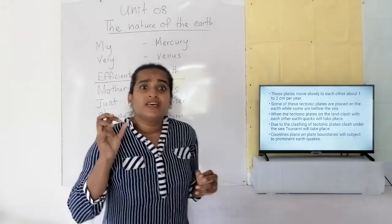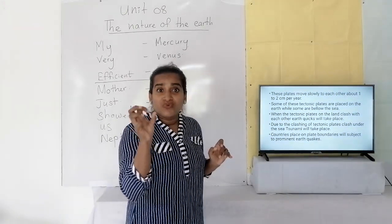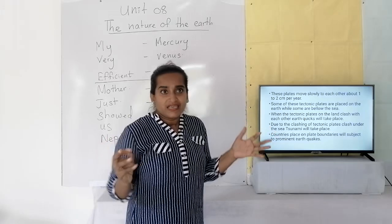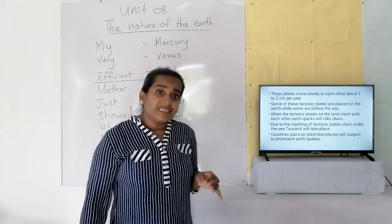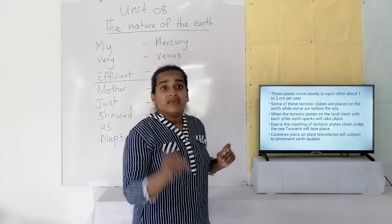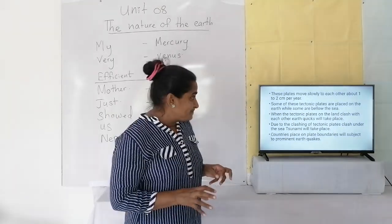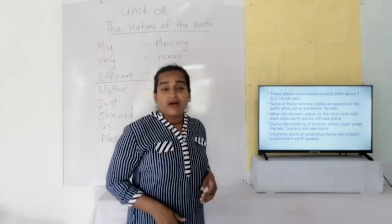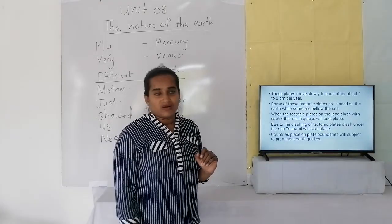These tectonic plates move very slowly — about one to two centimeters per year. They don't move very fast; it's a very slow movement that you can't even notice. Some of these tectonic plate boundaries are positioned below the sea, and some can be seen on the ground.